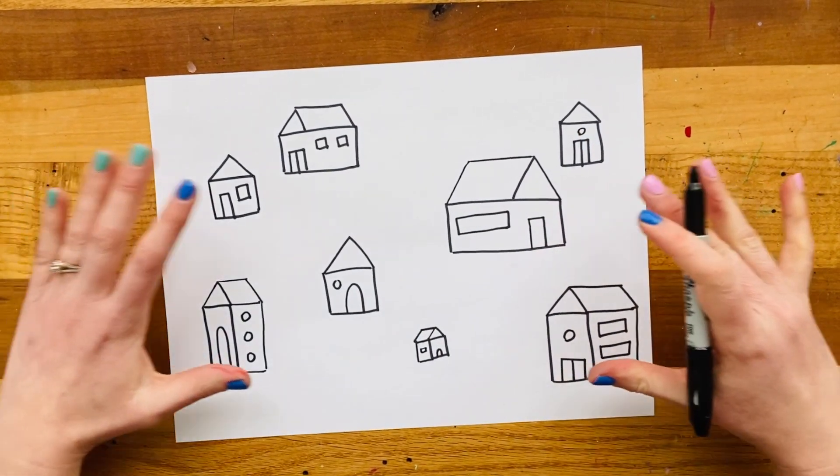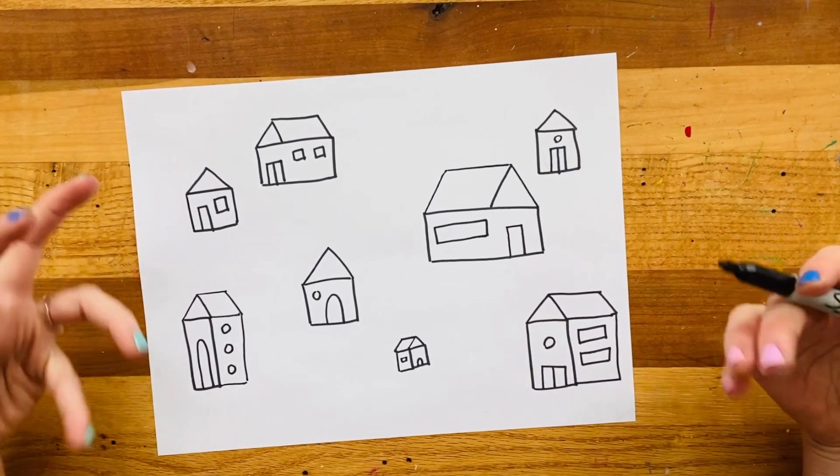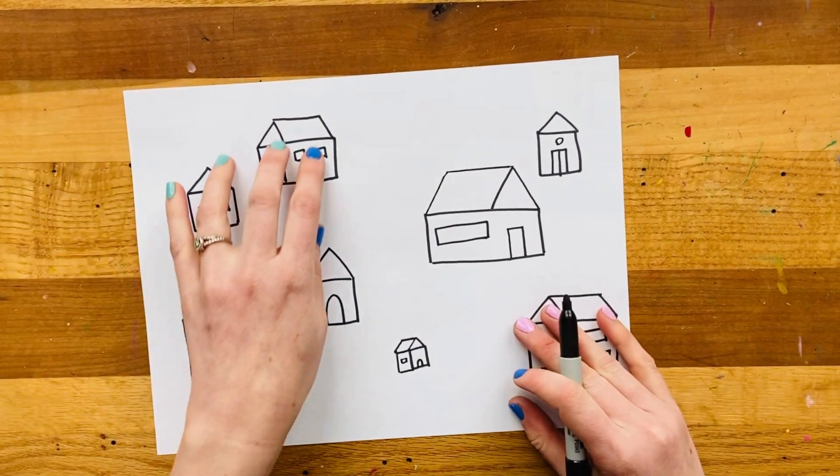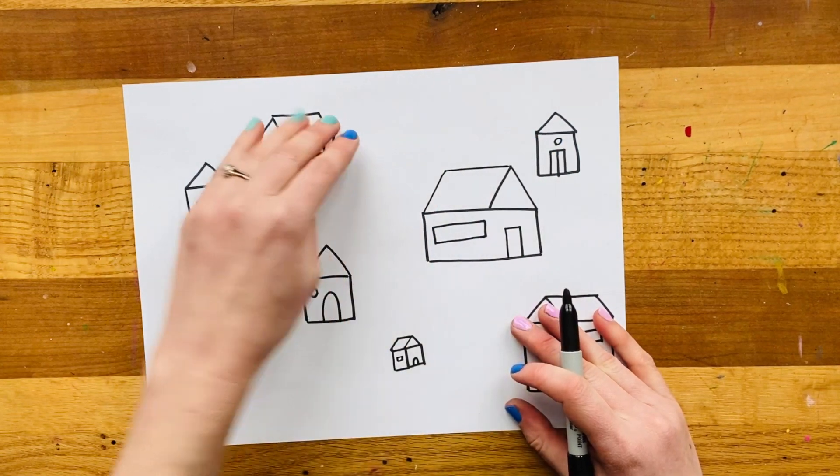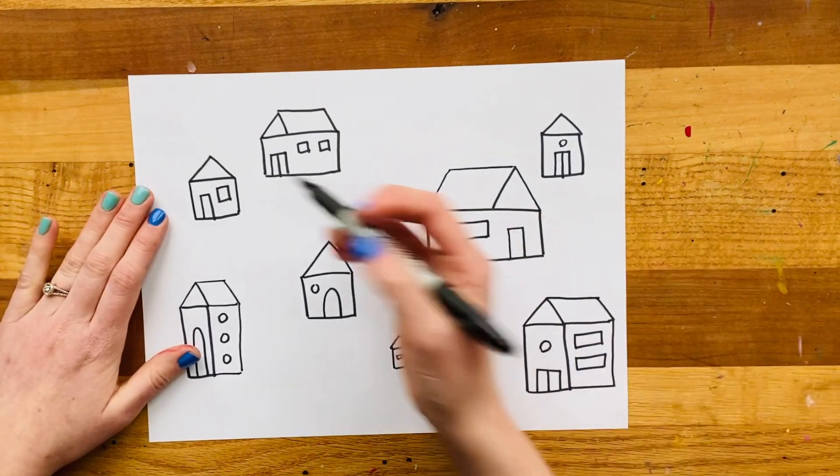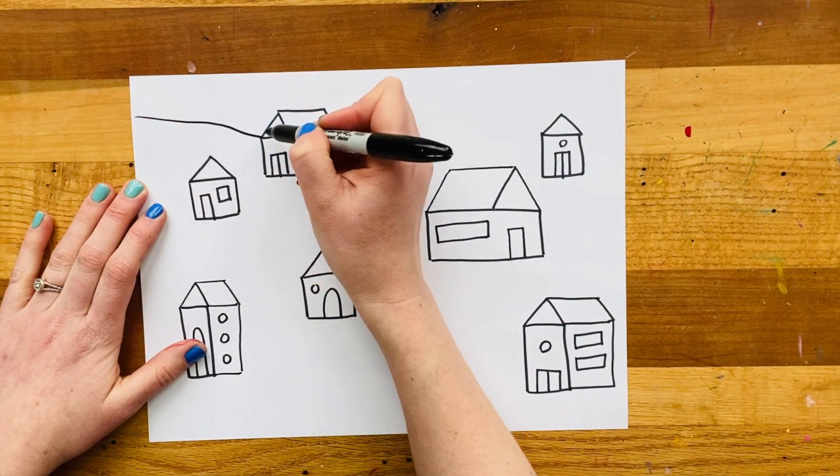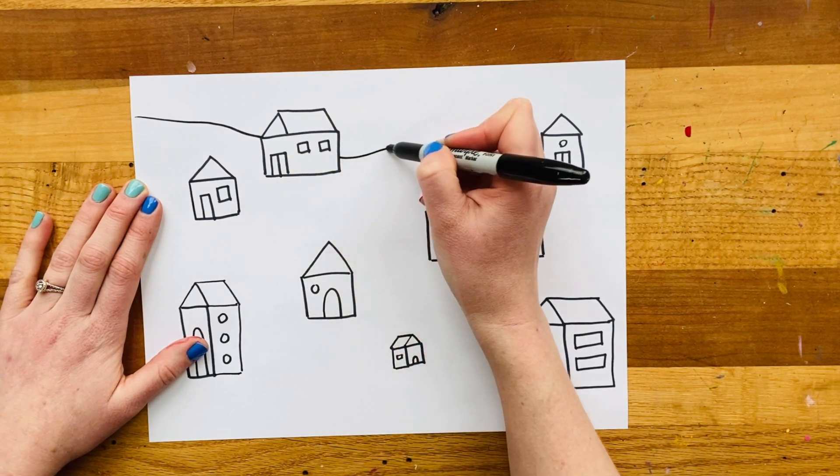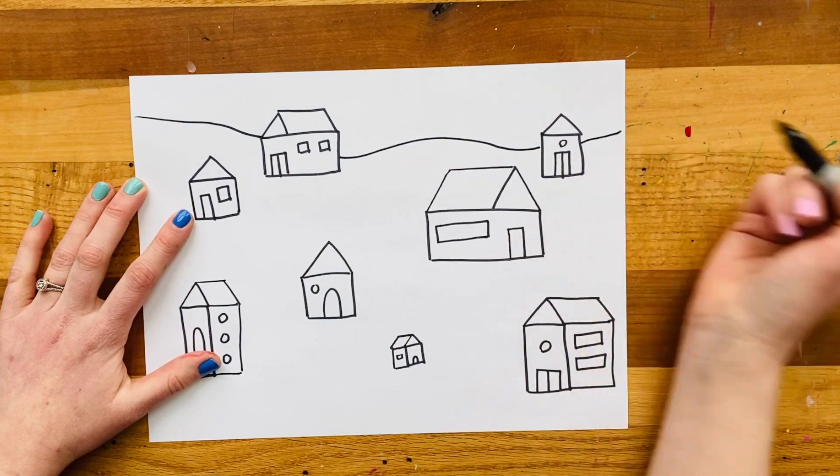The final step is to now ground your houses so that they're not floating in space. So again, we need that little horizon line where the sky and the earth meet. Now, since my houses are way up here, my horizon line needs to at least be this high. Because if I make a horizon line here, all of these are still floating in the sky. So I'm going to make my horizon line here with a gentle curve. Remember, when you hit one of the objects, you're going to pretend your line continues, and then come back up, I'm giving it a nice bubbly mountain top, and then stop.